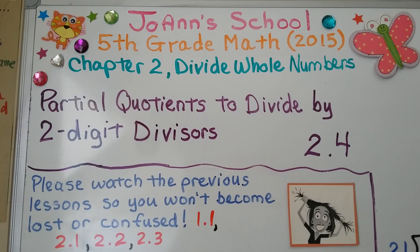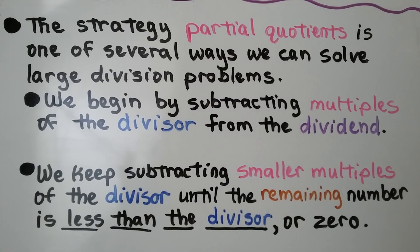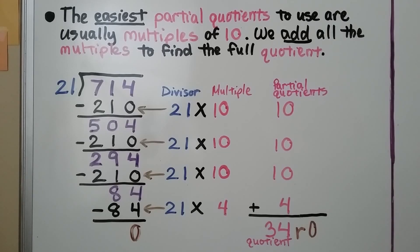We have a few videos linked in the description if you missed them. The strategy partial quotients is one of several ways we can solve large division problems. We begin by subtracting multiples of the divisor from the dividend, and keep subtracting smaller multiples until the remaining number is less than the divisor or 0. The easiest partial quotients to use are usually multiples of 10. We add all the multiples to find the full quotient.